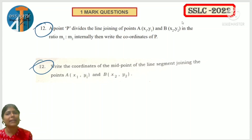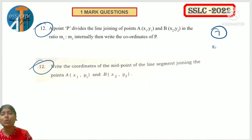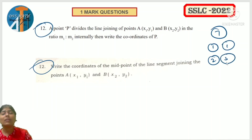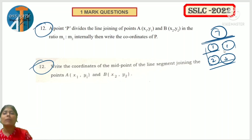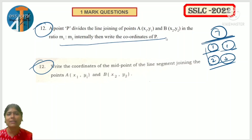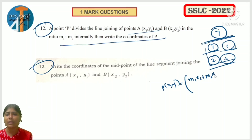Next question - Coordinate Geometry. This lesson has 7 marks weightage: 1 MCQ for 1 mark, one 2-mark question, one 3-mark question, total 7 marks. The section formula: P(x,y) equals (M1·X2 + M2·X1)/(M1+M2) and (M1·Y2 + M2·Y1)/(M1+M2). There are good chances this will be asked.